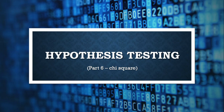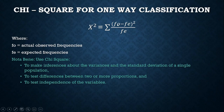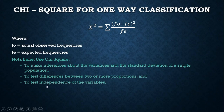This is the last part of our six-part series for the topic hypothesis testing. We will be covering chi-square. We have two formulas for chi-square. We will be using chi-square to make inferences about the variance and standard deviation of a single population, to test the difference between two or more proportions, or to test the independence of variables.